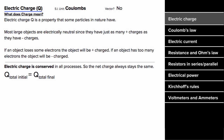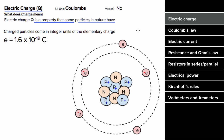Electric charge is a property that some, but not all, fundamental particles in nature have. The most commonly talked about fundamentally charged particles are the electrons, which orbit the outside of the atom. These are negatively charged. There's also the protons, which reside inside the nucleus, and these are positively charged. And the neutrons inside the nucleus don't have any net charge.